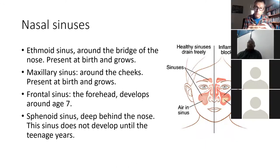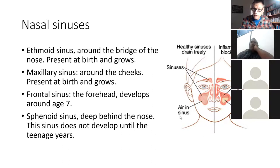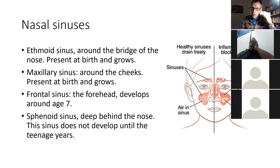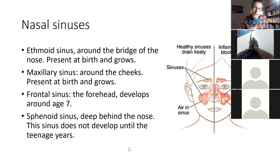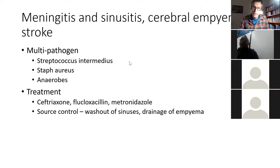Sinuses in children don't develop until about three to seven years of age and aren't fully developed until about seven years. This boy was eight. The ethmoid sinuses are next to the nose, maxillary sinuses over the cheeks, frontal sinuses at the forehead, and the sphenoid sinus deeper behind the nose — the sphenoid doesn't develop until teenage years. Sinus disease is quite common and can lead to very serious complications, as in this boy.